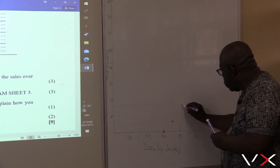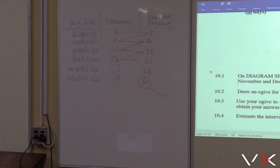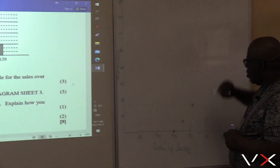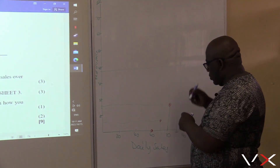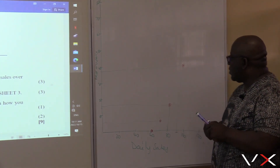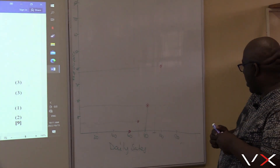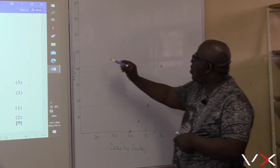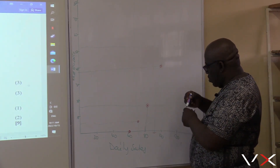After 80 and 16, the next point is 90 and 38. 90 will be somewhere here, and 38 is just close to 40, so it will be somewhere there. After 90 and 38, I have 100 and 51. 100 is somewhere here, goes with 51 — 51 will be somewhere there. That will be the point for (100, 51).